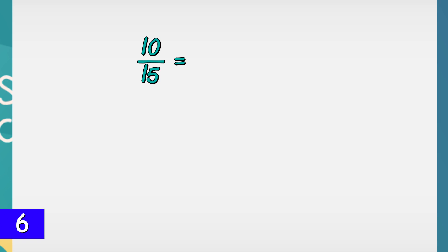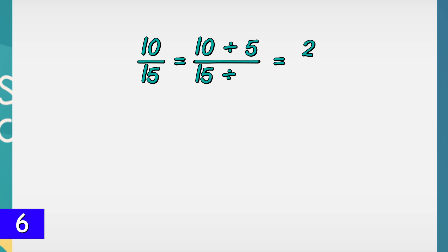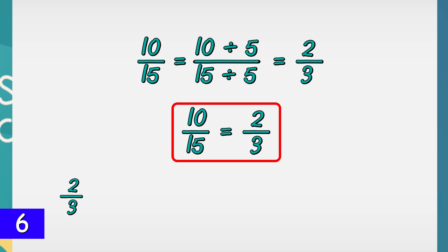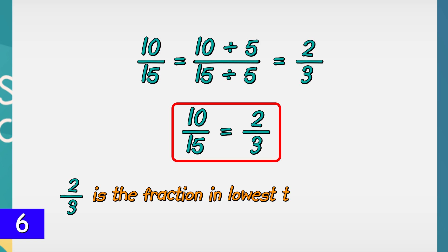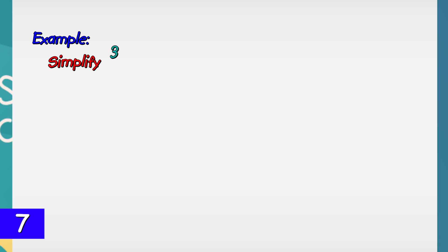Now divide both the numerator and denominator by 5. 10 divided by 5 is 2, and 15 divided by 5 is 3. Therefore, 2/3 is the lowest term of 10/15.